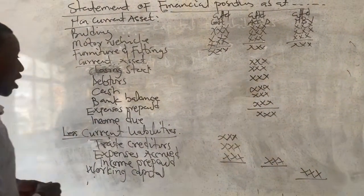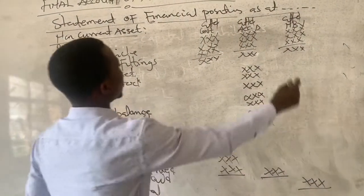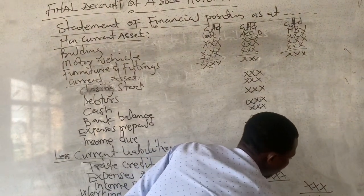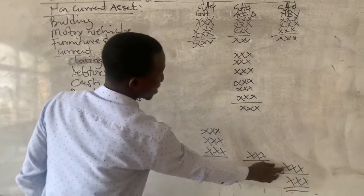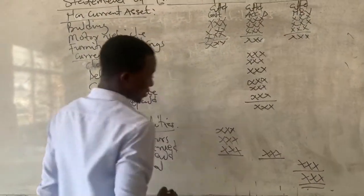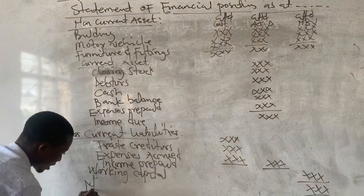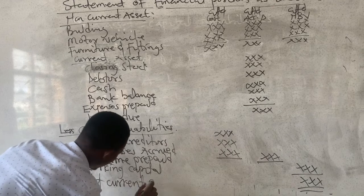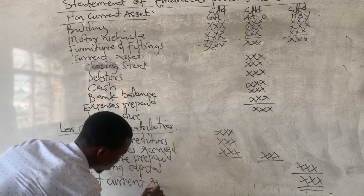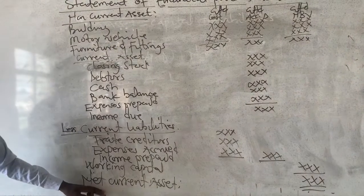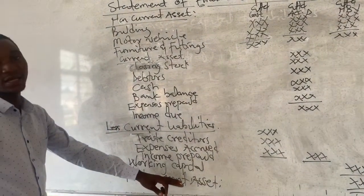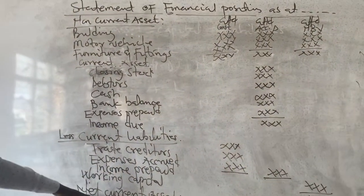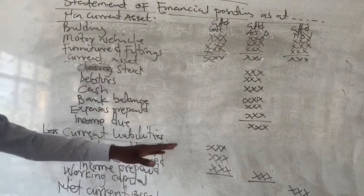After reporting our working capital — which is current assets minus current liabilities — we add it to the non-current assets. This gives us our net current assets, which is one of the key balances in the statement of financial position.